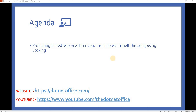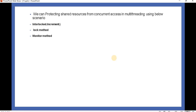First of all, what is the meaning of a shared resource? A shared resource can be a variable or a method. Generally we protect the method by using the thread class. For example, in a class if we have a public variable and that shared resource is used in multiple threading class methods, we need to protect it from concurrent access. Otherwise we will get inconsistent output.